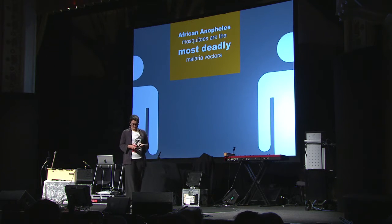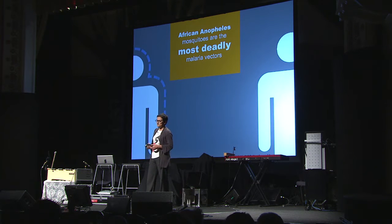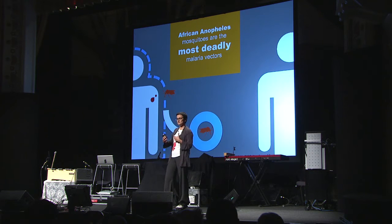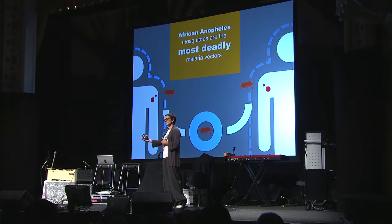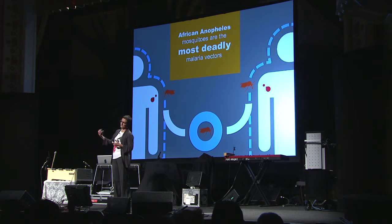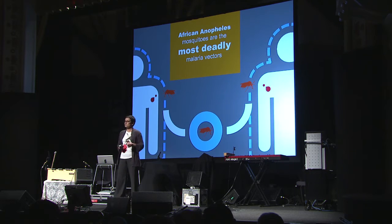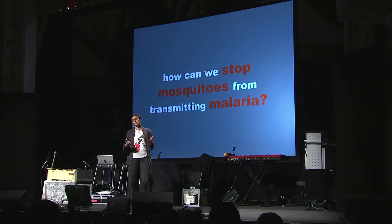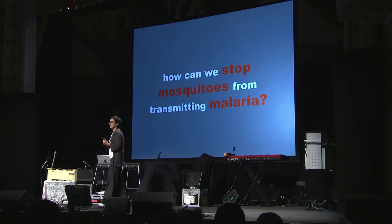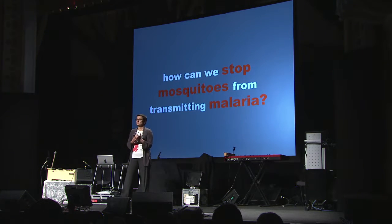How do mosquitoes transmit malaria? When a female mosquito bites a person infected with the malaria parasite, then after a few days — she takes the blood and the parasite — the next time she bites, she will inject the parasite into the next person, making them infected with malaria. So if we stop the mosquito, we stop malaria. But how can we stop the mosquito? There are already a few tools: we have insecticides to kill them, we have mosquito nets to protect people. But that's it — just two tools to target a mosquito that kills almost a million people every year.